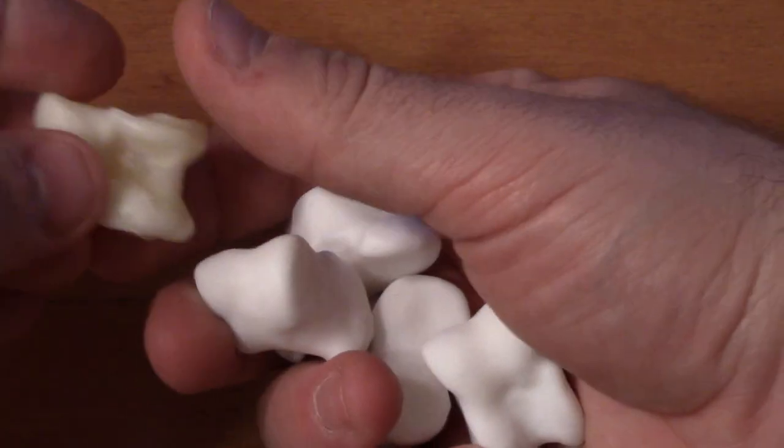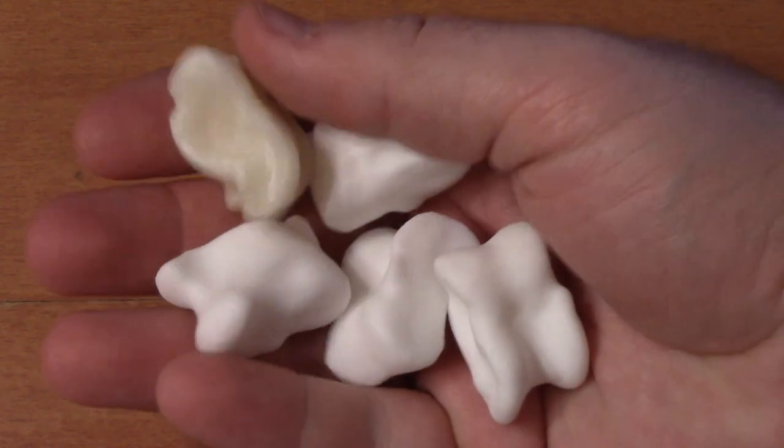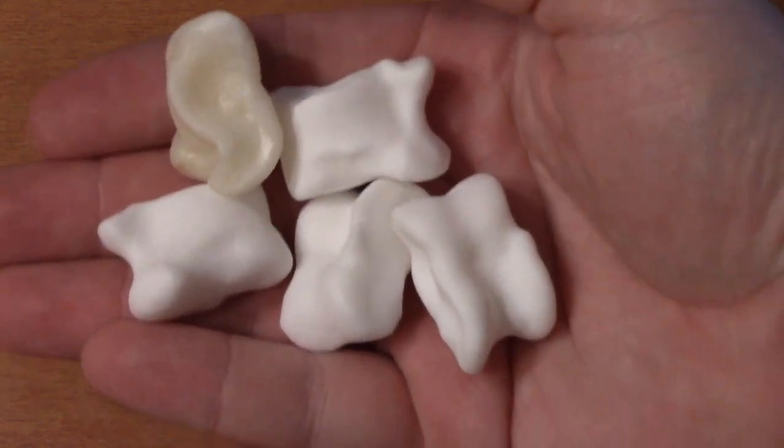Here you can see one of the real animal bone masters that was 3D scanned and duplicated. They are the same size and almost identical in weight. They sound the same when dropped on wood.